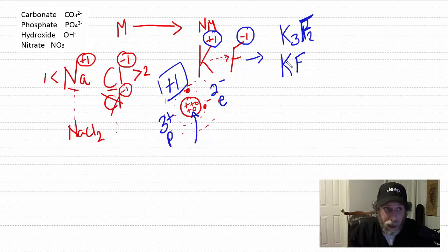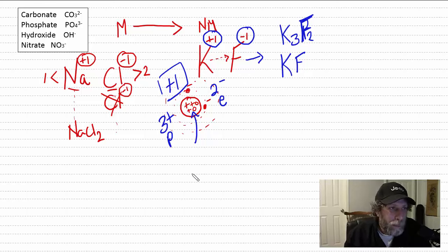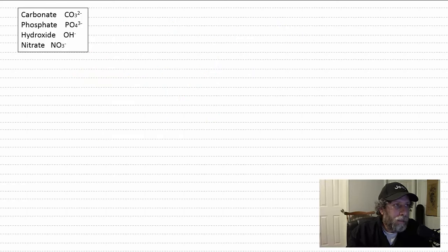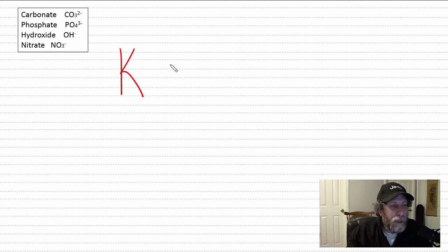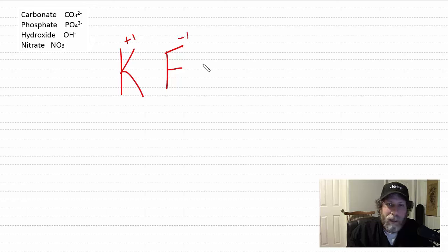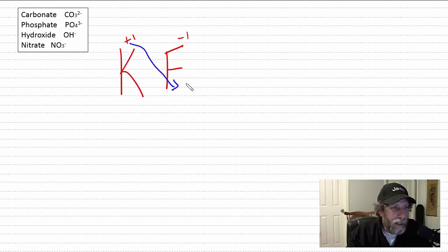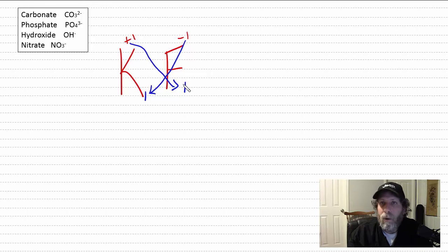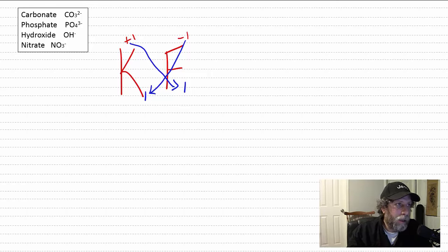Even though the individual ions are charged, putting them together zeros each other out. A useful technique is the cross-down method: write the charge of each element, then cross the numbers diagonally. Potassium becomes plus one, fluorine becomes minus one — cross them down and you get K₁F₁, or just KF.